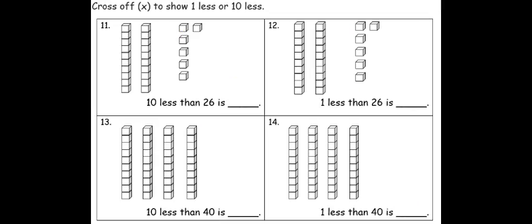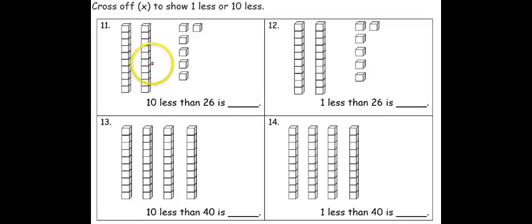In my last section, I'm going to use one picture and cross cubes off to show one less or ten less. In problem eleven, it says ten less than twenty-six is blank. So I've started with the twenty-six cubes — two groups of ten and six cubes. I need to show ten less than that, so I'm going to cross off a group of ten. That leaves me with one group of ten and six ones. Ten less than twenty-six is sixteen.